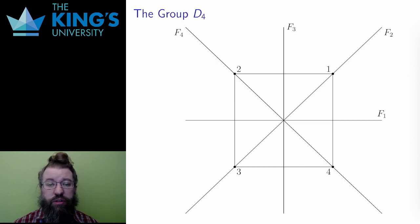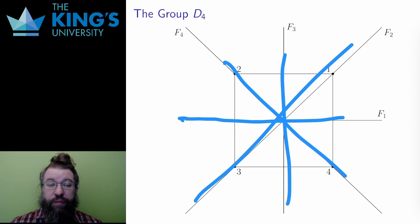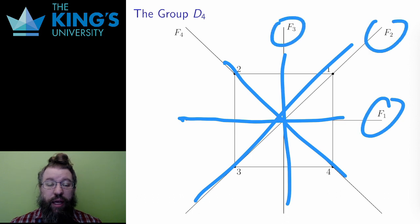Then, what about reflections? Well, there are four lines of reflections that will preserve the square. I've labeled them F1, F2, F3, and F4 in this diagram. And feel free to convince yourself that these are indeed the only lines of reflection that will preserve this square.